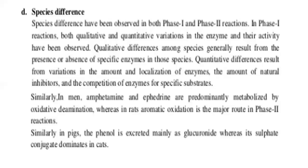Species differences have been observed in both Phase 1 and Phase 2 reactions. In Phase 1 reactions, both qualitative and quantitative variation in the enzyme level have been observed. Qualitative differences among species generally result from the presence or absence of specific enzymes. Quantitative differences result from variation in the amount and localization of the enzyme, the amount of natural inhibitors, and the competition of enzymes for the specific substrate.